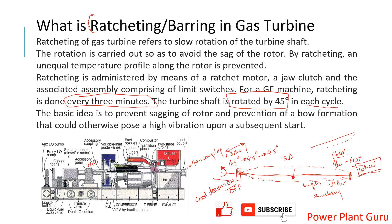Cool-down ON means ratchet is active; cool-down OFF means standstill. This is basically happening to prevent shaft sagging.